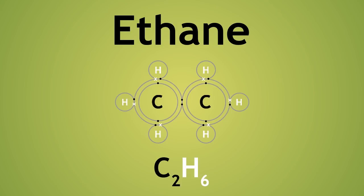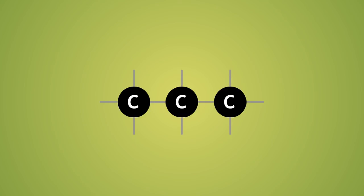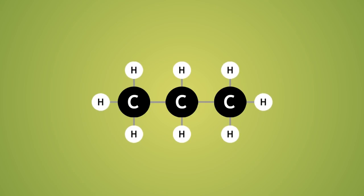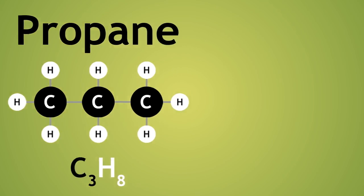Now we understand the way these molecules are bonded, we can show the next molecule in displayed formula, representing the covalent bonds simply with lines. Here is propane, followed by butane.